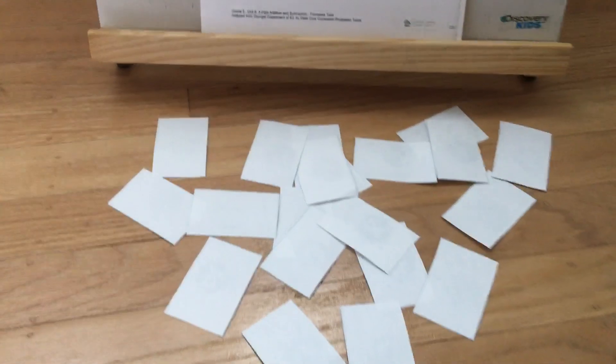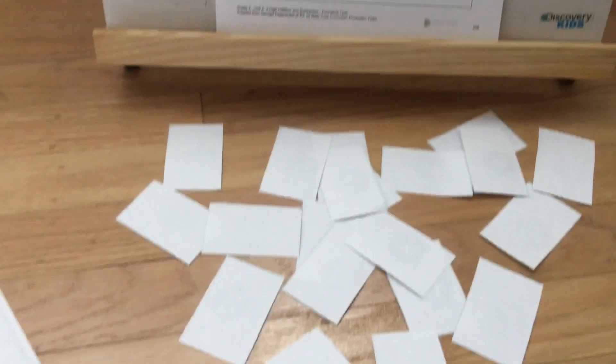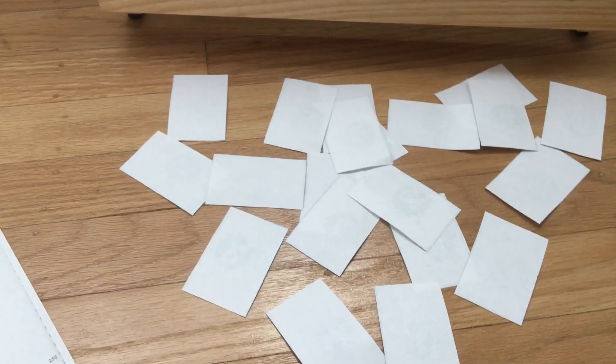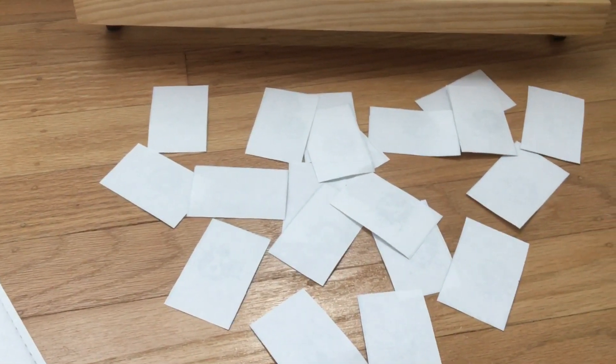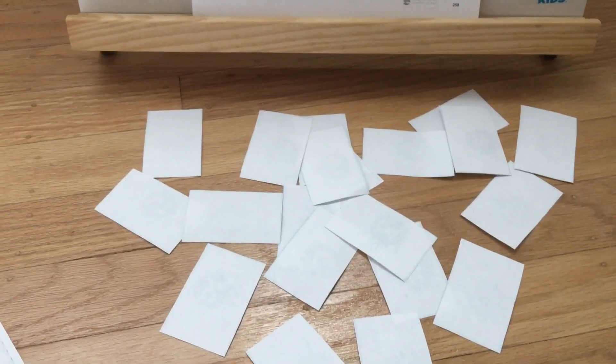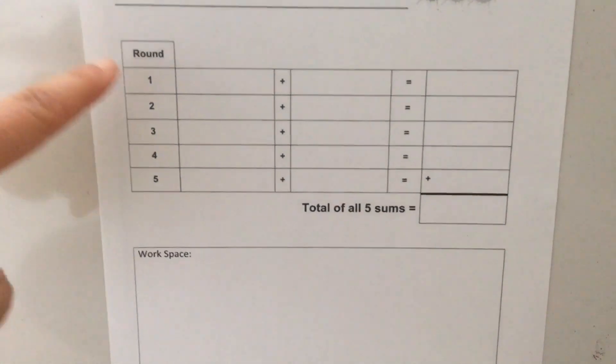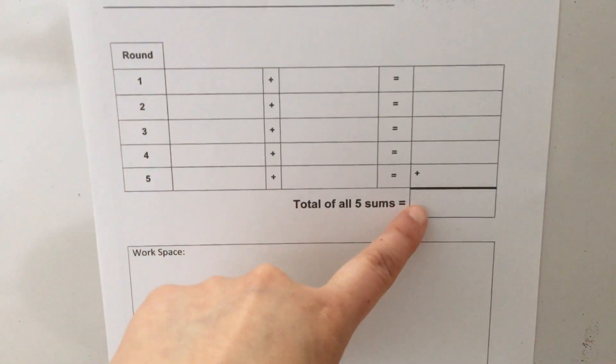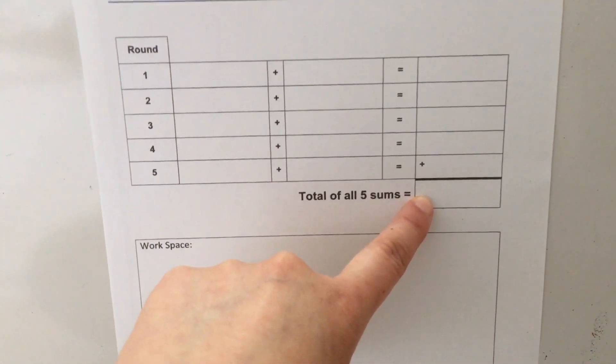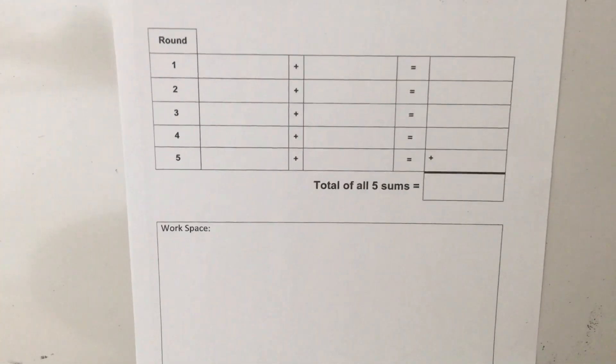Now the object of this game is we're gonna be playing in five rounds. These number tiles are going to be used to help you create two two-digit numbers, and you want to try to make those two two-digit numbers equal as close to 100 as you can. After you play five rounds, you want your total, the sum of all five of these rounds, to be as close to 500 as possible.